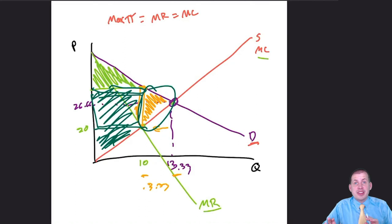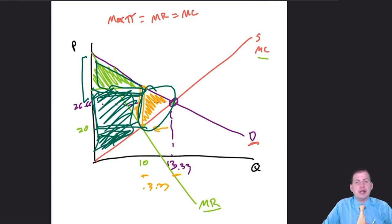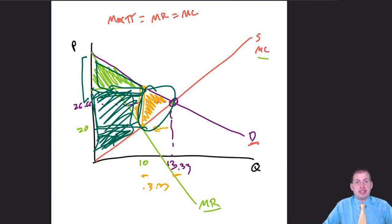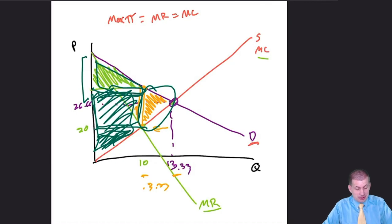You can figure out the exact numbers for all of this using geometry — calculating the area of the rectangle, the area of each triangle. That gives you precise values for consumer surplus, producer surplus, and deadweight loss. But that is the main story of why monopolies are bad.